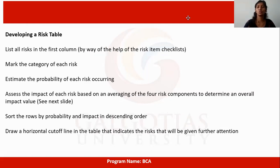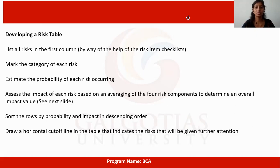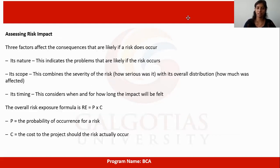Developing a risk table involves listing all risks in the first column using a risk item checklist. Mark the category of each risk, estimate the probability of the risk occurring, and assess the impact of each risk based on an averaging of four risk components to determine an overall impact value. Sort the risks by probability and impact in descending order, then draw a horizontal cutoff line indicating which risks will receive further attention.